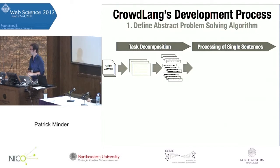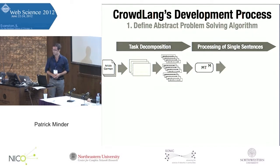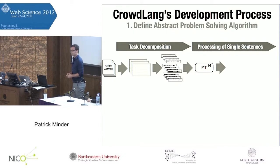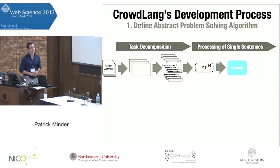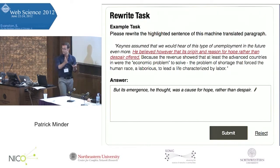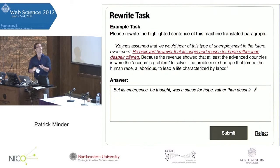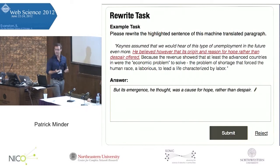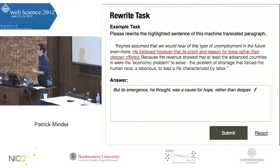As we all know, this machine translation will be quite bad. So next, we introduce the crowd in a so-called rewrite task. We present them a paragraph of translated text and ask them to rewrite the red highlighted text in a way that they think shows the right semantics and is syntactically and grammatically correct.